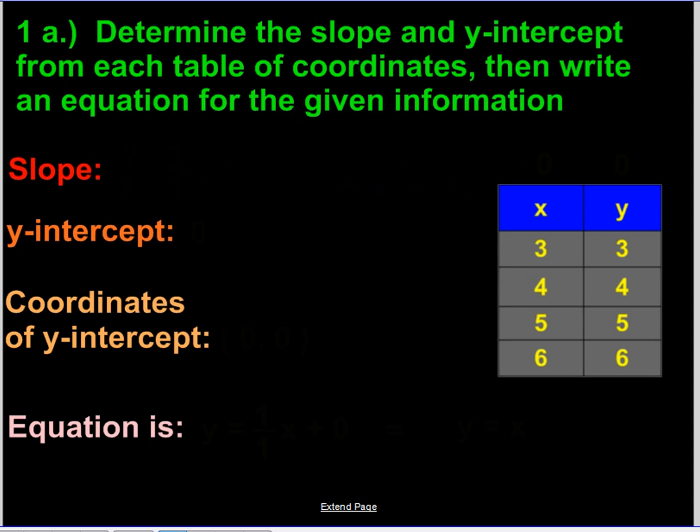We'll start by taking a look at question 1a. You are to determine the slope, the y-intercept from each table of coordinates, and then write an equation for the given information.